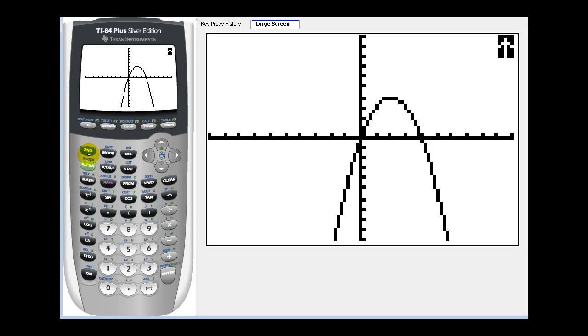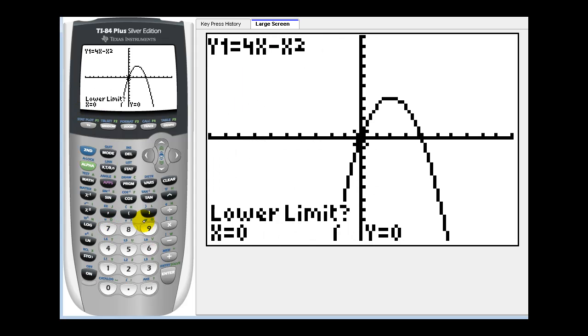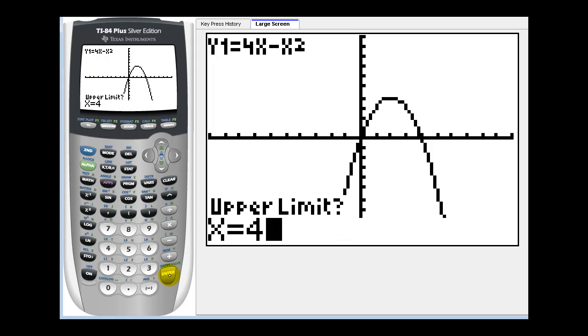If we press second trace, this brings up the calculation menu. And now if we select option seven, it'll ask for the lower limit of integration which is zero. Enter. Upper limit of integration which is four. Press enter.